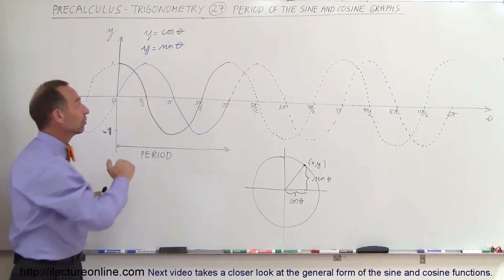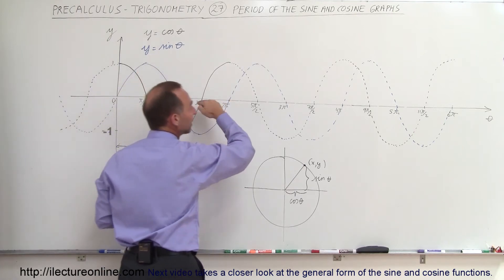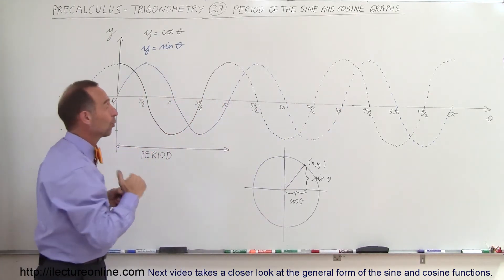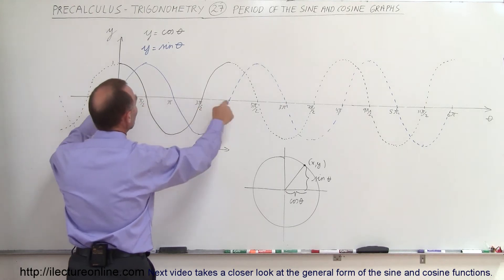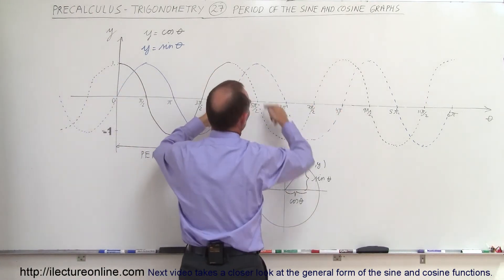You can see that every time we go around the unit circle we cover a distance along the x-axis, or in this case along the theta axis, a distance of 2 pi, and then we repeat the entire function. We go another 2 pi, the whole function is repeated.